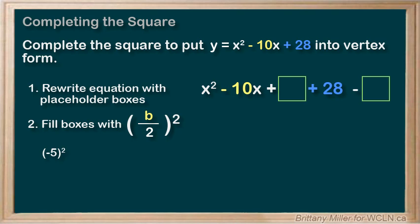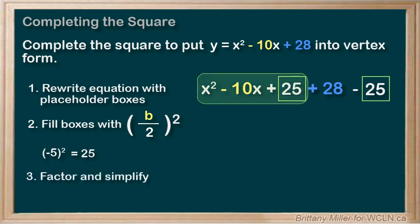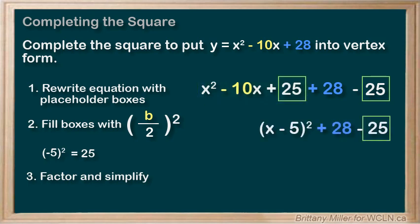We square that to get 25. So 25 goes in both of our boxes. Step 3. This part is going to factor into x minus 5 squared. And then we just simplify what's left over, leaving us with an answer of x minus 5 squared plus 3.